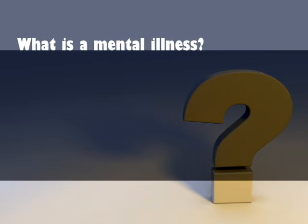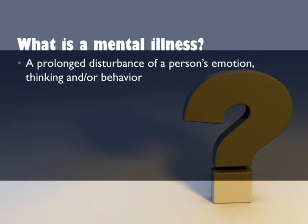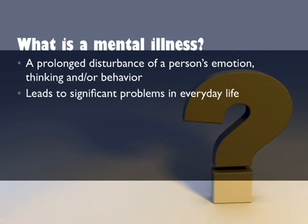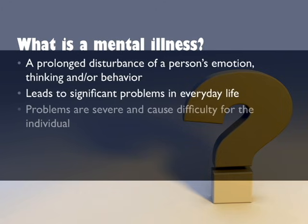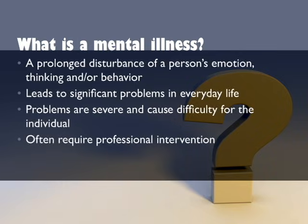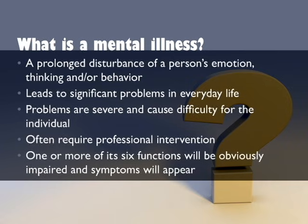Now that we understand how the brain works, how it can become sick, and how it operates differently in people with a mental illness, we can examine what exactly a mental illness is. Mental illness is a prolonged disturbance of a person's emotions, thinking, and/or behavior, which leads to significant problems in everyday life. These problems are severe and cause difficulty for the individual, and they often require professional intervention. When someone has a mental illness, one or more of the brain's six functions will be obviously impaired, and they will have symptoms such as sadness, difficulty thinking, auditory and visual delusions, and many others.